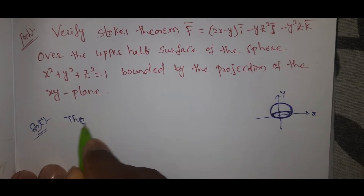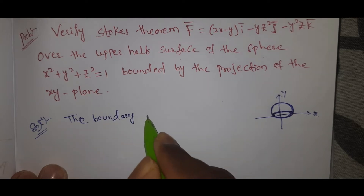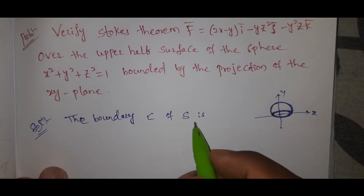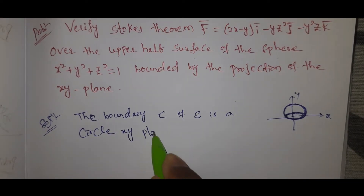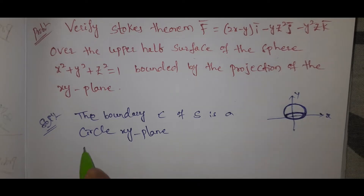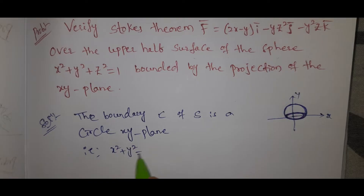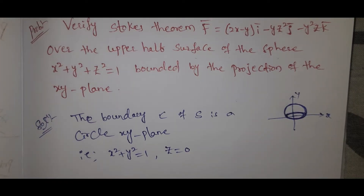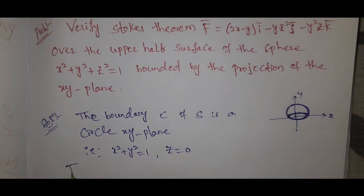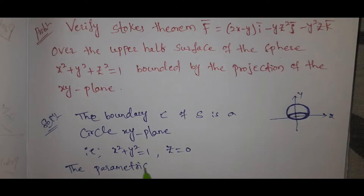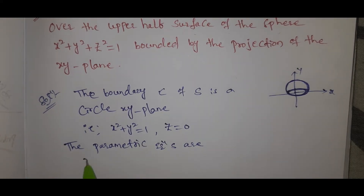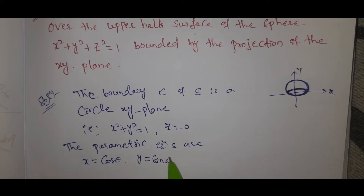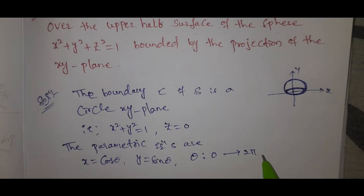The boundary C of S is a circle in the xy plane, that is z = 0, where x² + y² = 1. Now let's take the circle form and look at the parametric equations: x = cosθ, y = sinθ, with θ from 0 to 2π.